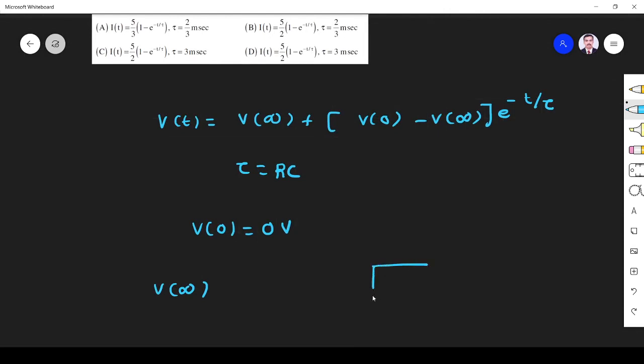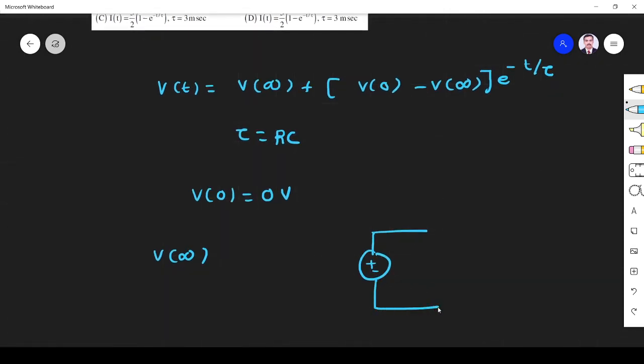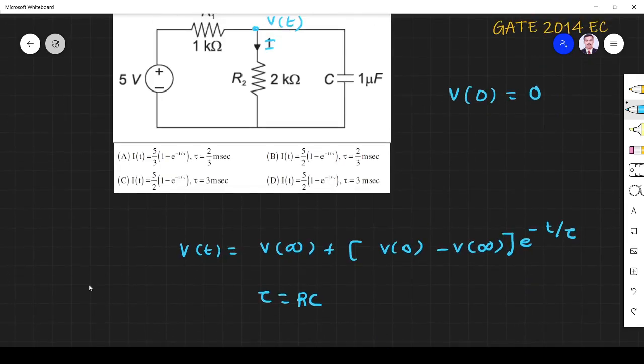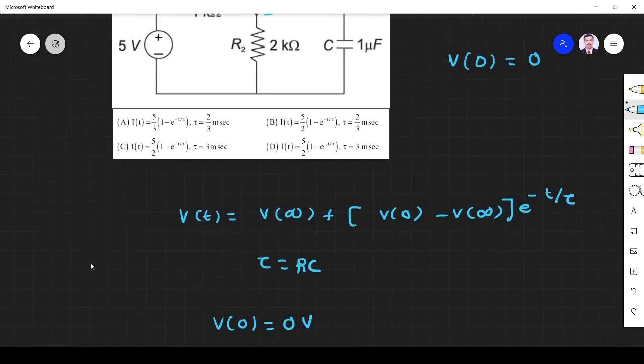Right? Okay. So it will be going like this. This capacitor will be open under steady state. C is open circuit. V of 0 volt. So this is resistor voltage across this is V(t). So what is the resistor value? 1 ohm, 1k, 2k, 5 volt.